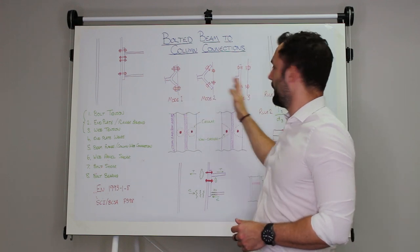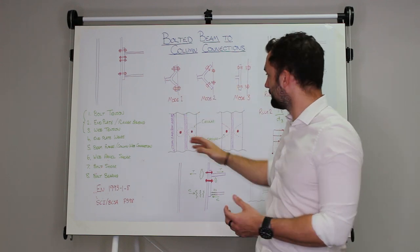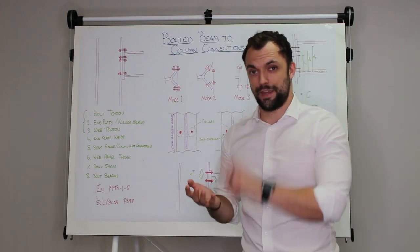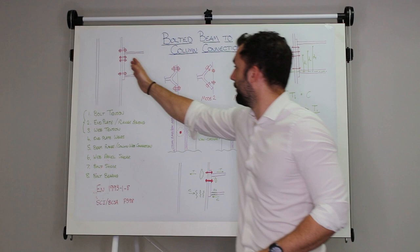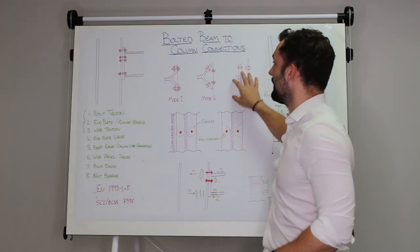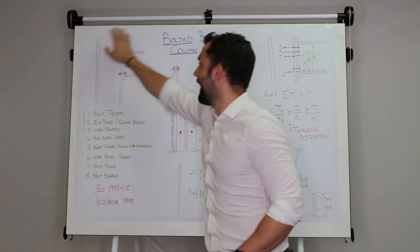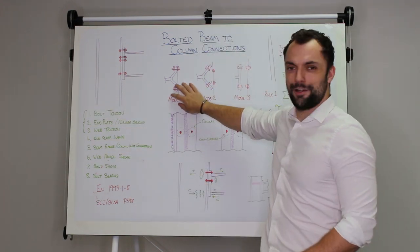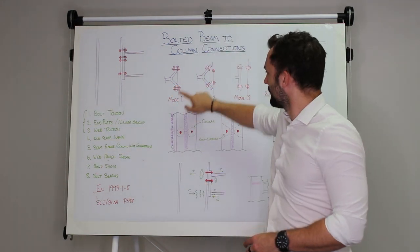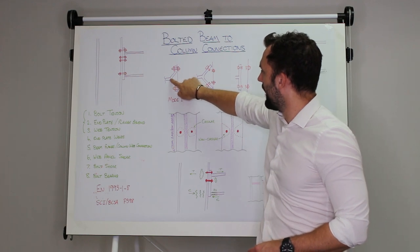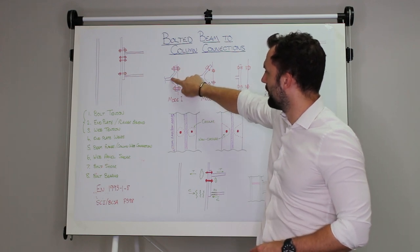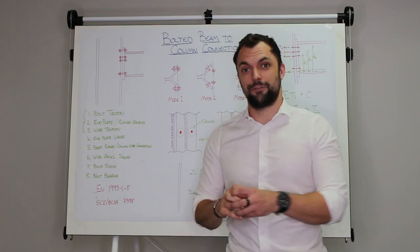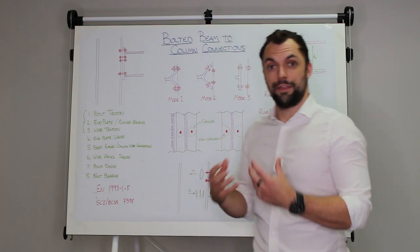And there are different ways that that t-stub can fail. Mode one is entirely the bending failure of the end plate or the column flange. It could happen at either side, so for each of these you check in the right side and you check in the left side separately. So that's entirely a failure of the flange, so it bends twice here and here, or in the top case here, here and here. The bolts, it doesn't matter how strong the bolts are if the plate behind the bolts fails, then the joint has failed.